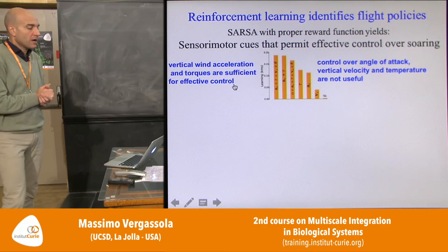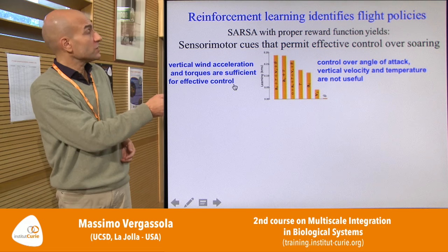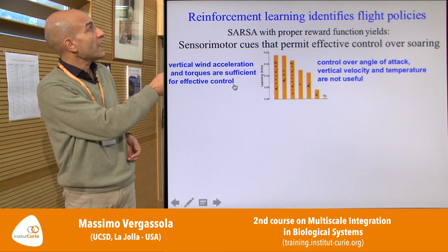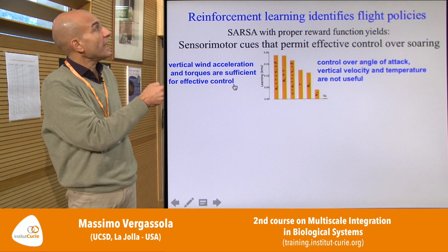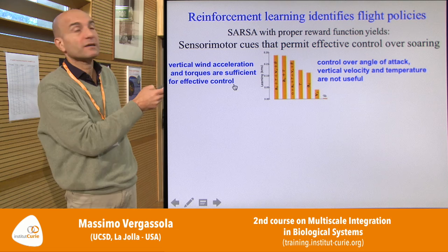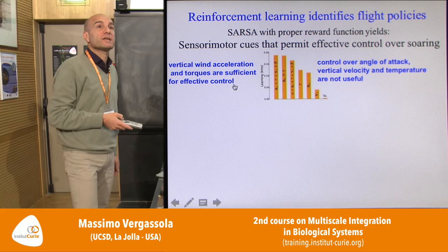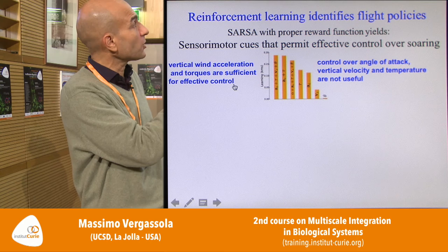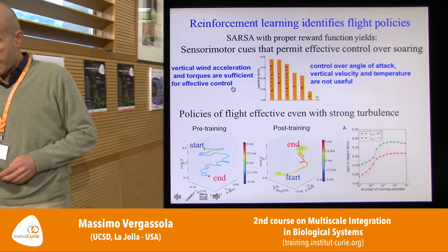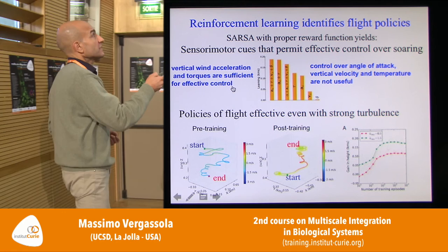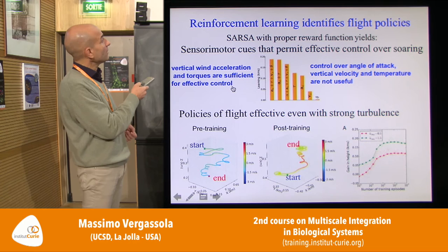The result: sensing vertical acceleration, torque (the difference in acceleration on the two wings), vertical velocity, and temperature is essentially equivalent to sensing just vertical acceleration and torque. This lets us identify the most useful sensory-motor cues, reducing the list to just vertical acceleration and torque. We then ask the agent to develop a policy mapping these two cues to bank angle, going through a learning phase. At the beginning, the agent sinks even in an ascending current.